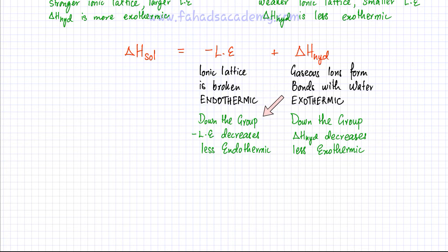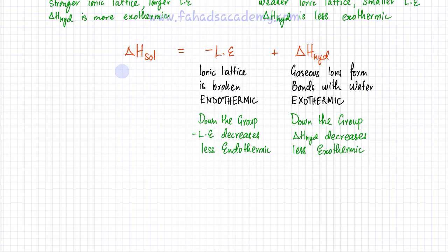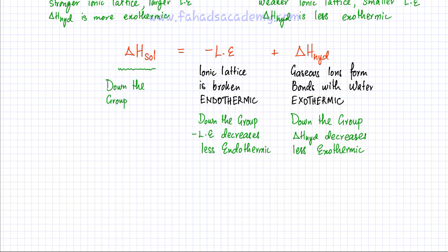As you move down the group, the cation size increases, so the lattice is weaker and easier to break. The value of minus lattice enthalpy decreases — it becomes less endothermic. Similarly, moving down the group, the cation size increases so bonds formed with water molecules are also weaker, meaning enthalpy of hydration is also less exothermic. So as you move down the group, both lattice enthalpy and enthalpy of hydration decrease. Since solubility increases down the group for Group 2 hydroxides, this indicates that the enthalpy of solution becomes more exothermic down the group.